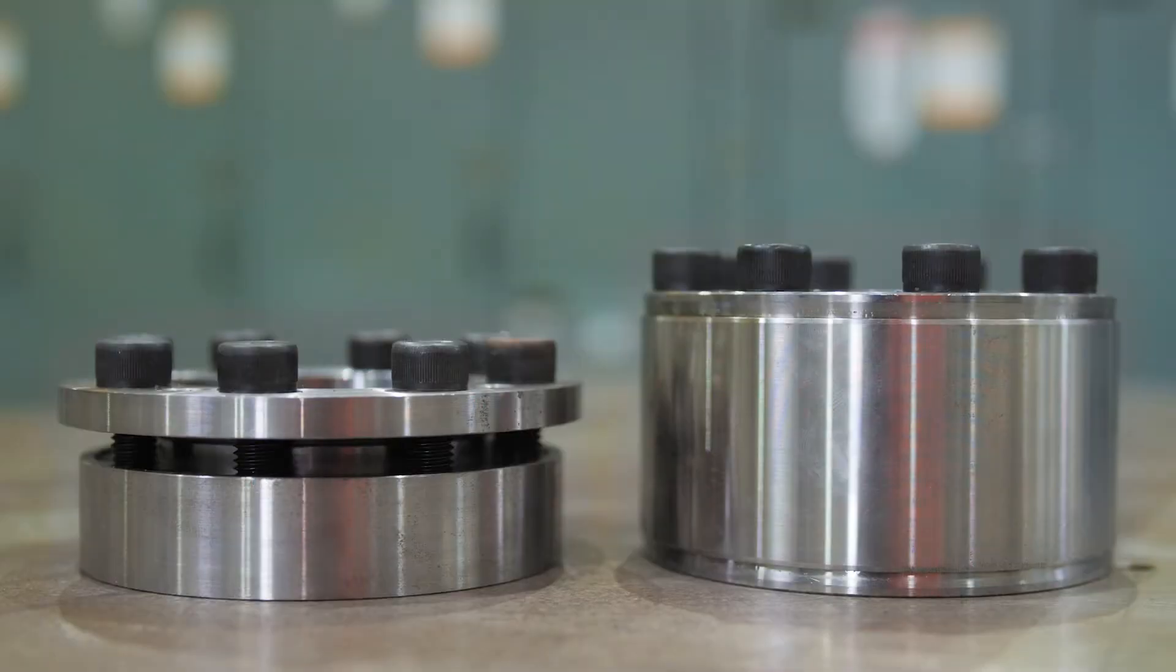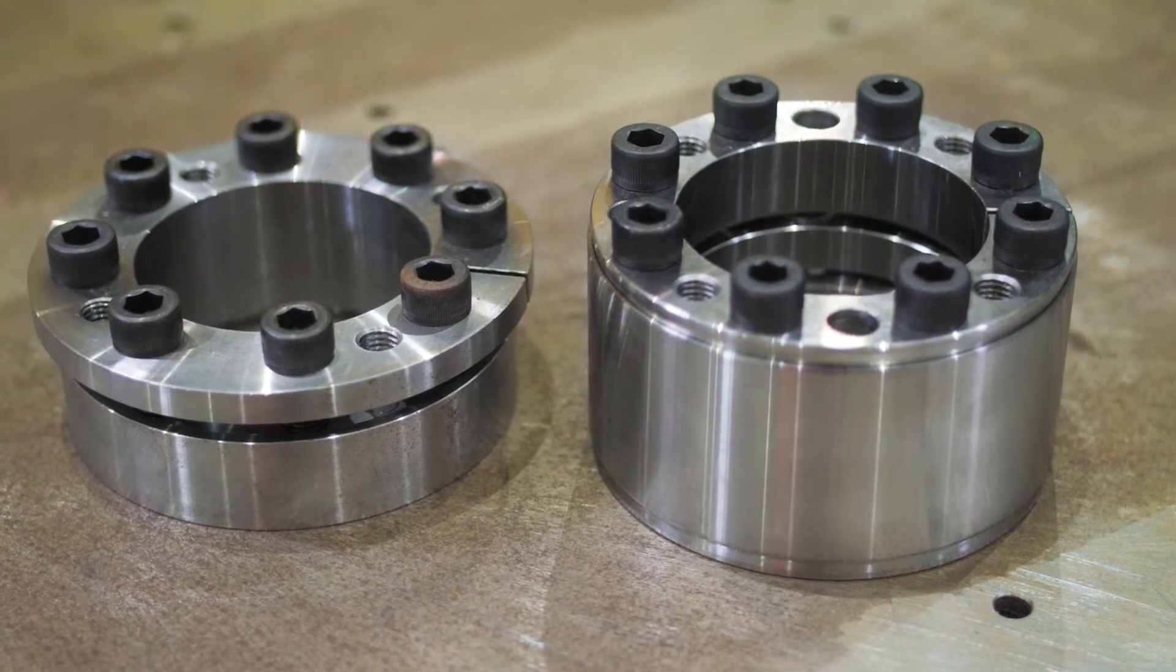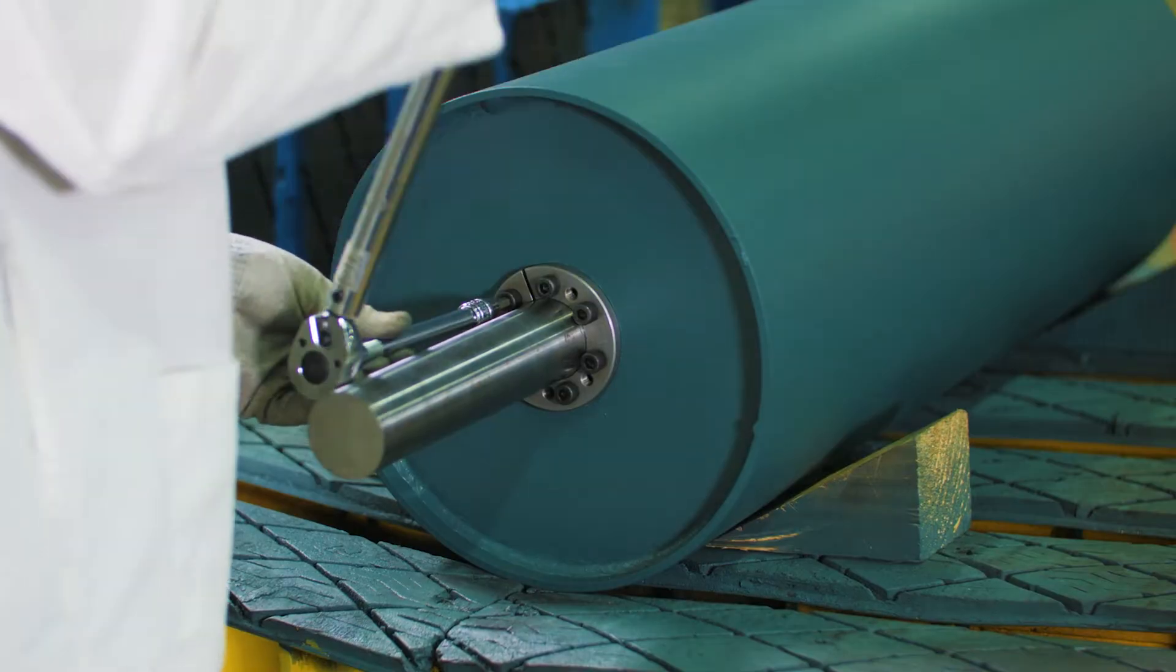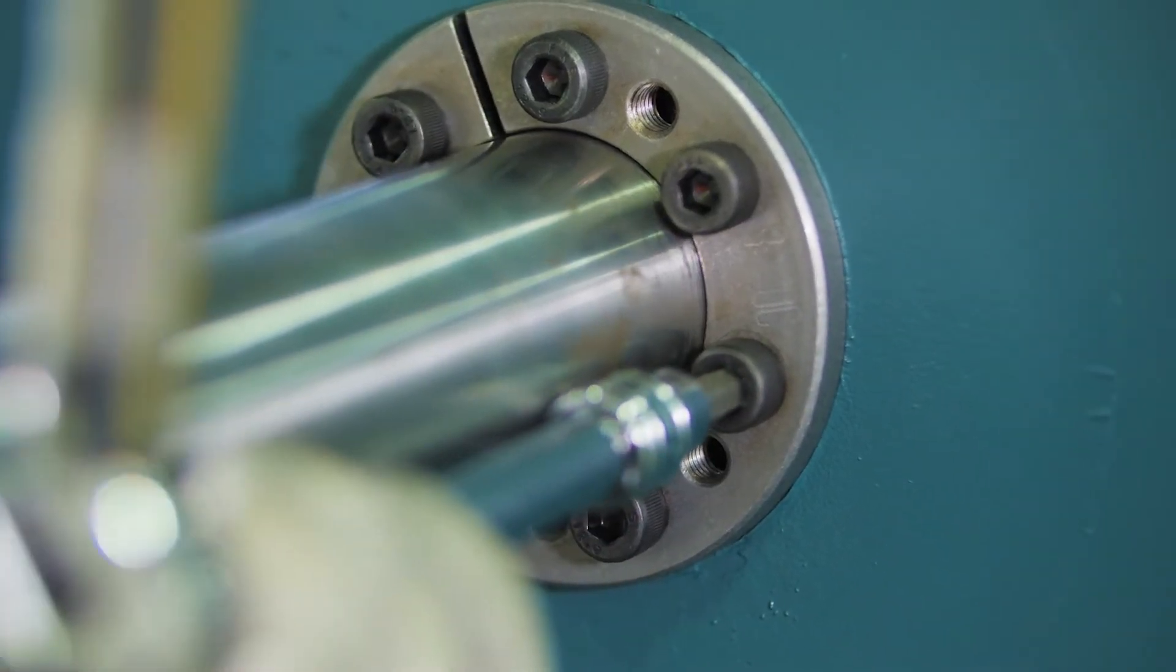Keyless locking devices are typically used in high torque applications. They provide a concentric grip without the need for machining a keyway in the shaft, and they are offered in bore sizes larger than a typical bushing and hub system can accommodate.